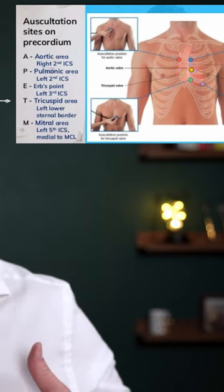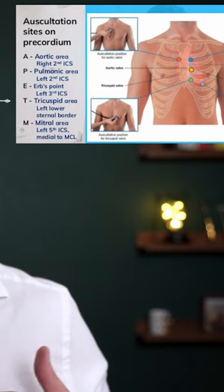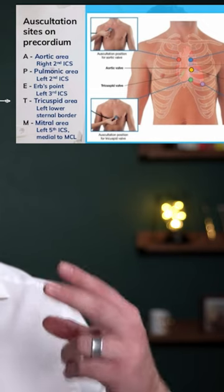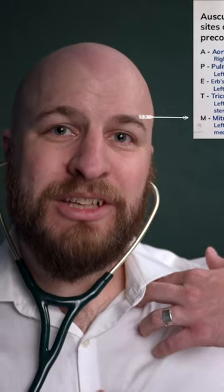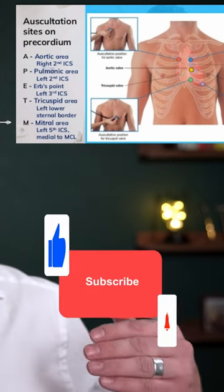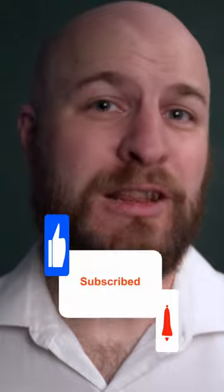Moving down between your fourth and fifth ribs, that's where you'll hear your tricuspid valve, which is between the right atrium and ventricle. Finally, find the mid clavicular line at the fifth intercostal space - that's where you'll hear your mitral valve. Remember to refer to the heart sounds as lub-dub.